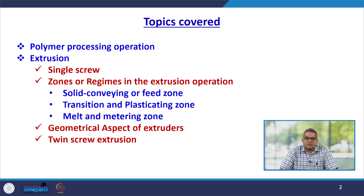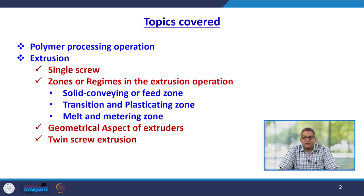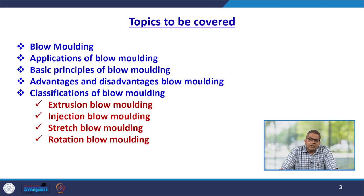We discussed extrusion, covering both single screw and twin extrusion processes. We discussed the various zones involved: the solid conveying or feed zone, transition and plasticising zone, and the melt and metering zones. We also discussed the geometrical aspects of extruders, their variety of combinations, frictional behaviour, and heat generation through friction.